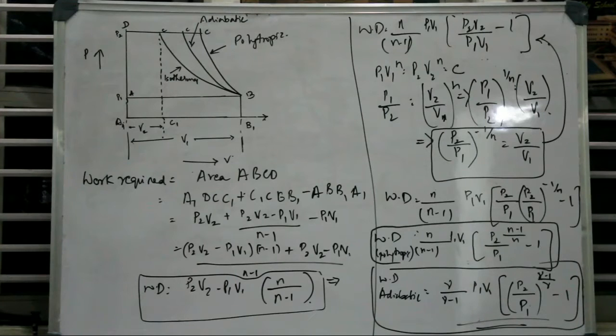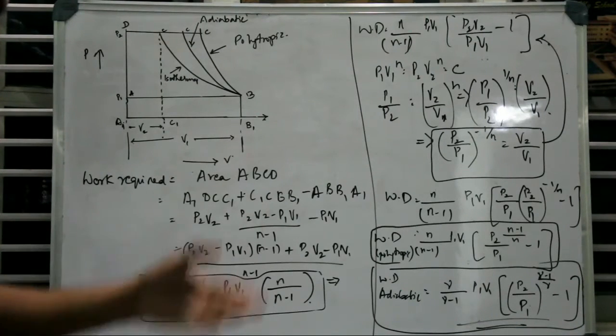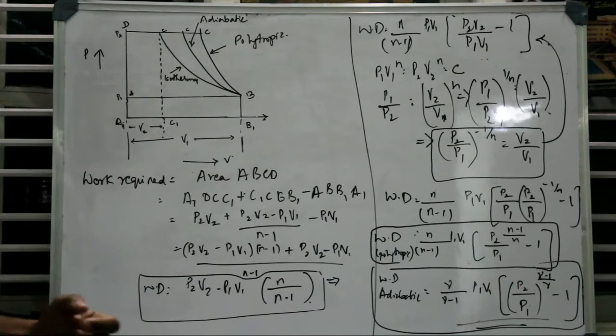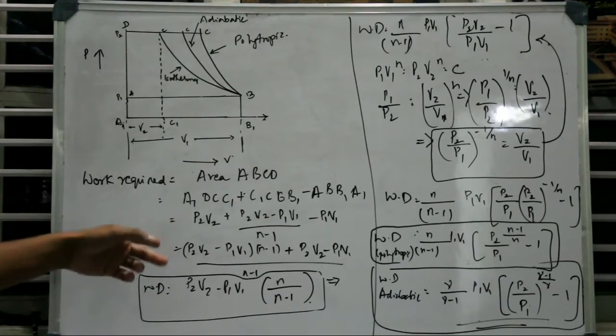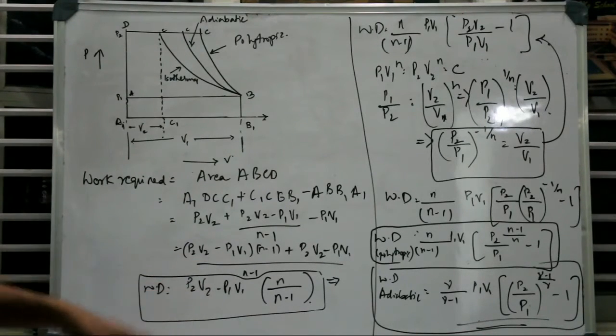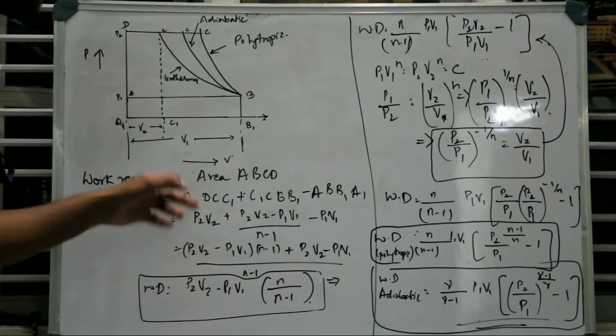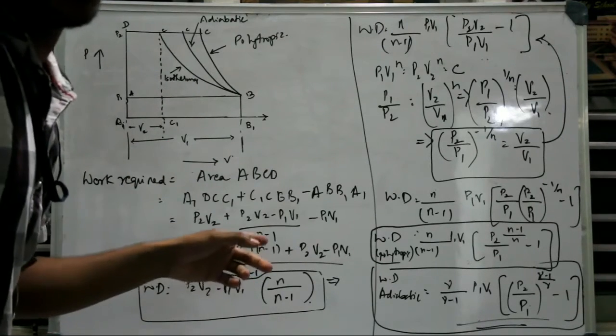There are two methods in which we can do this. One is by integrating V into DP and the other one is by taking the area under the curve. Here I will be showing it by the method of area under the curve.